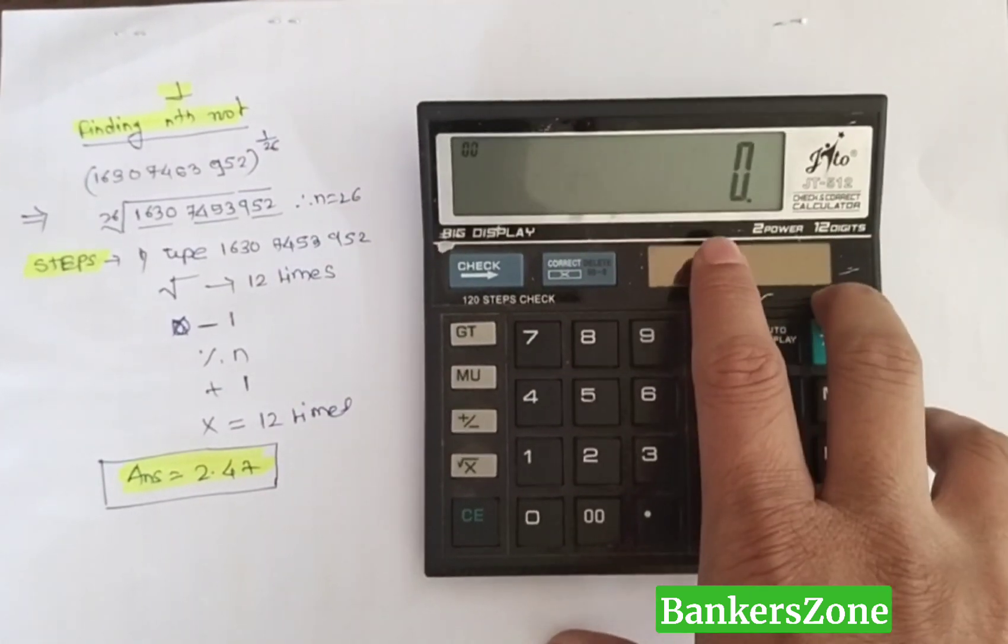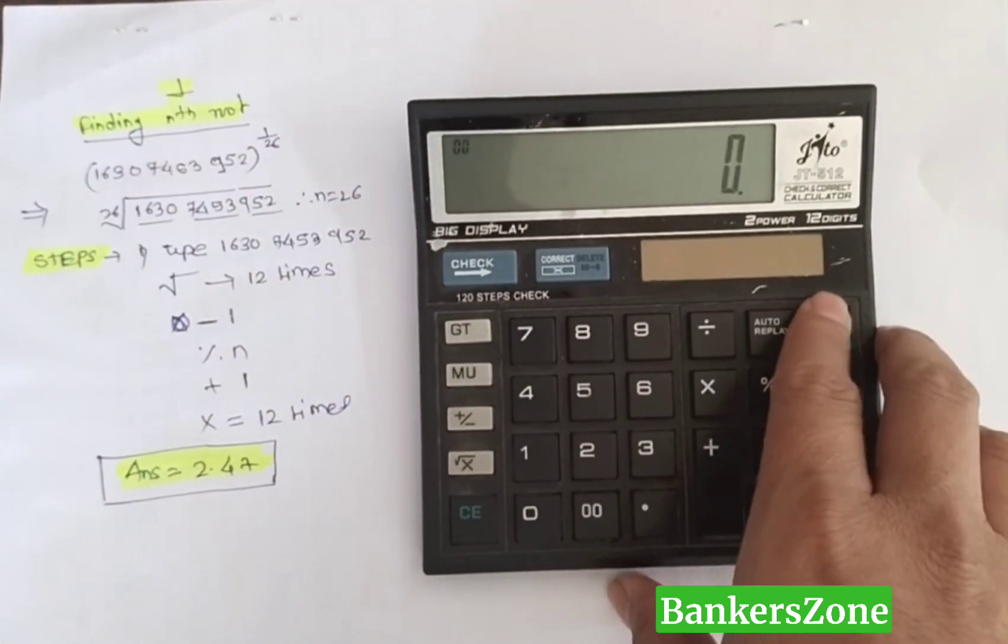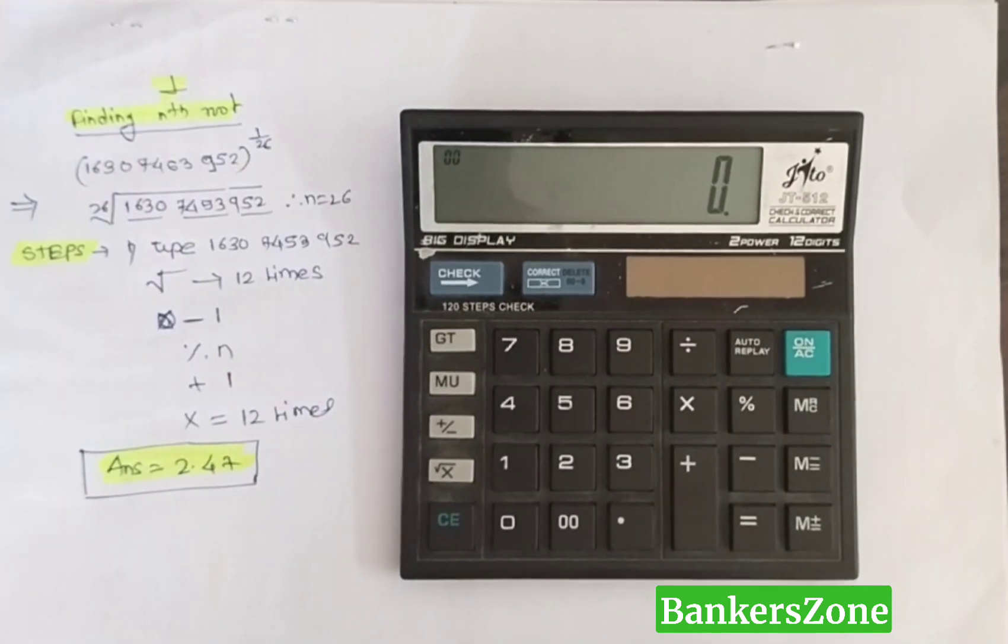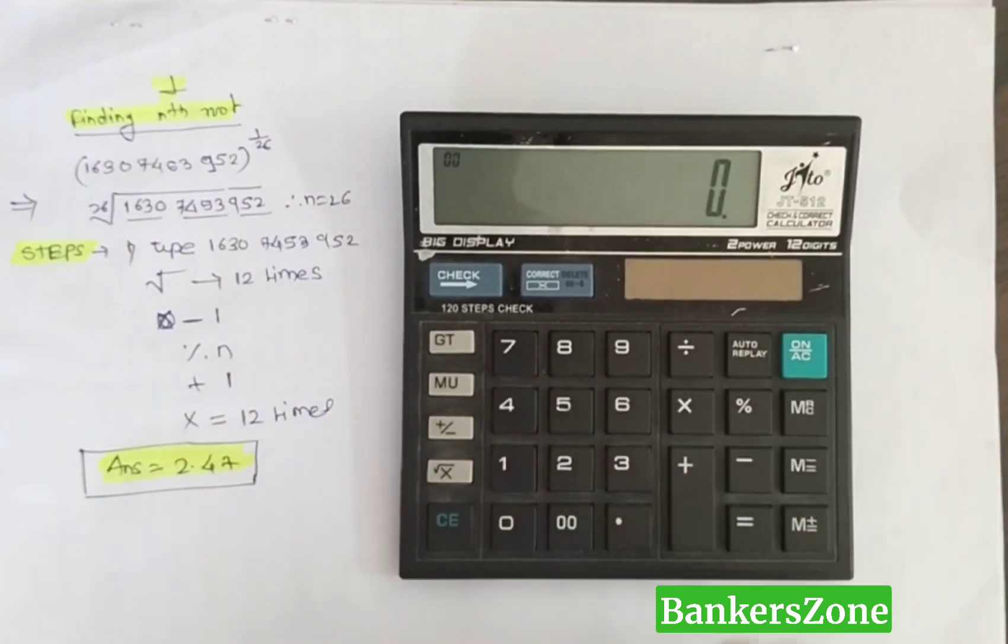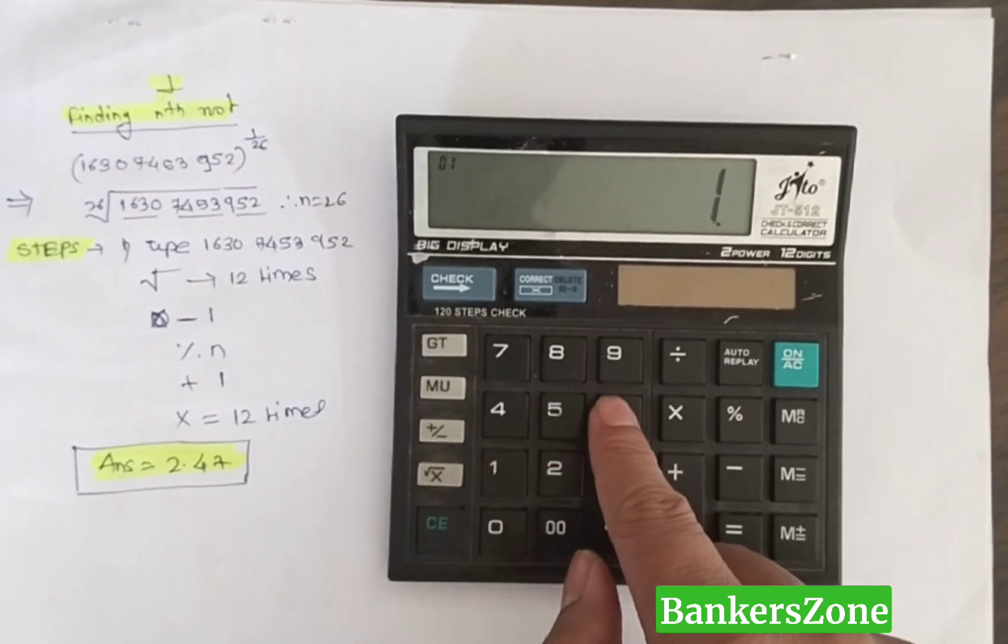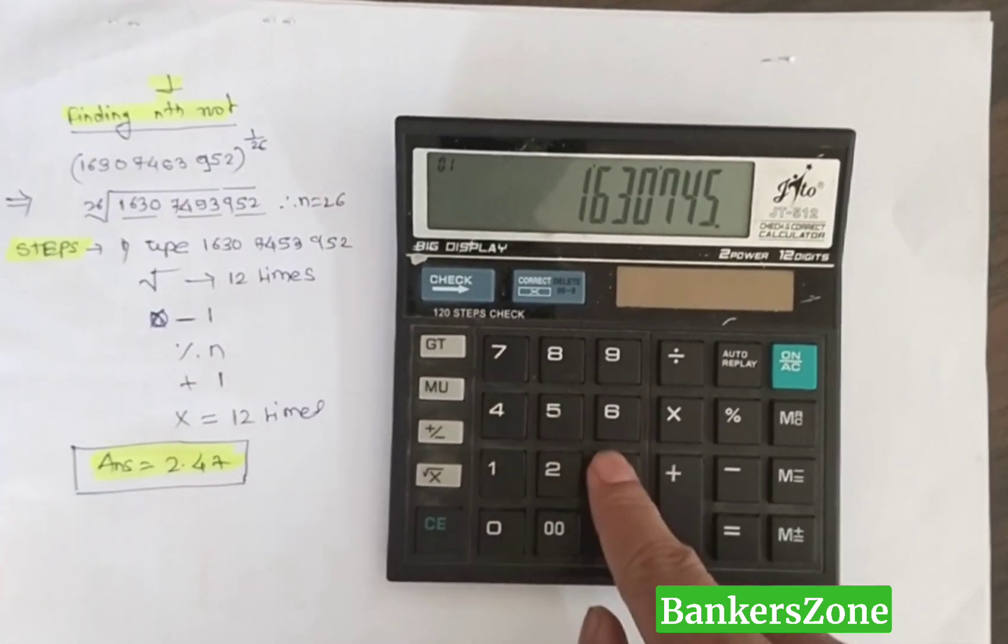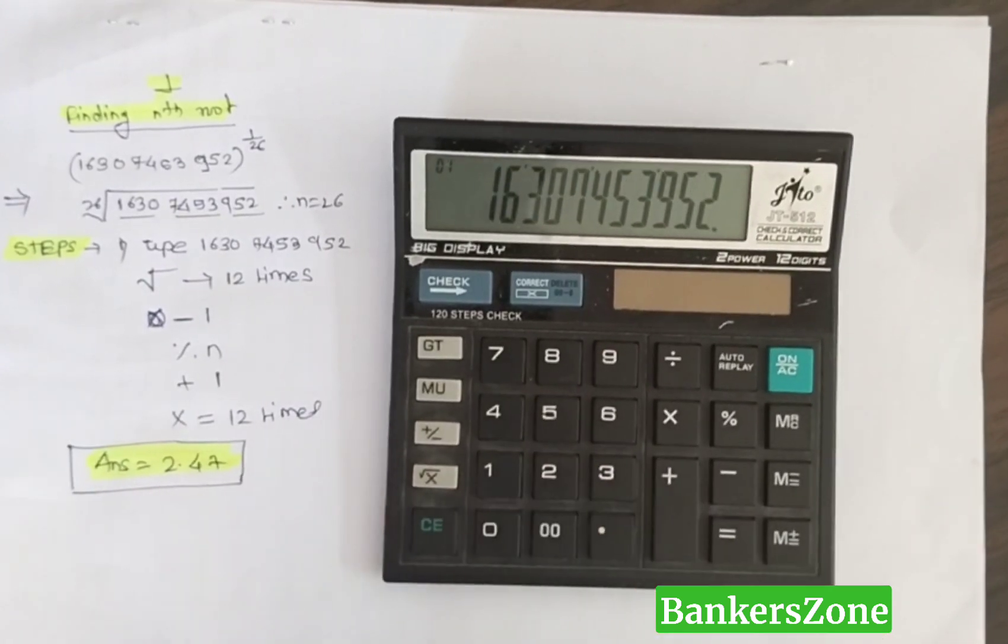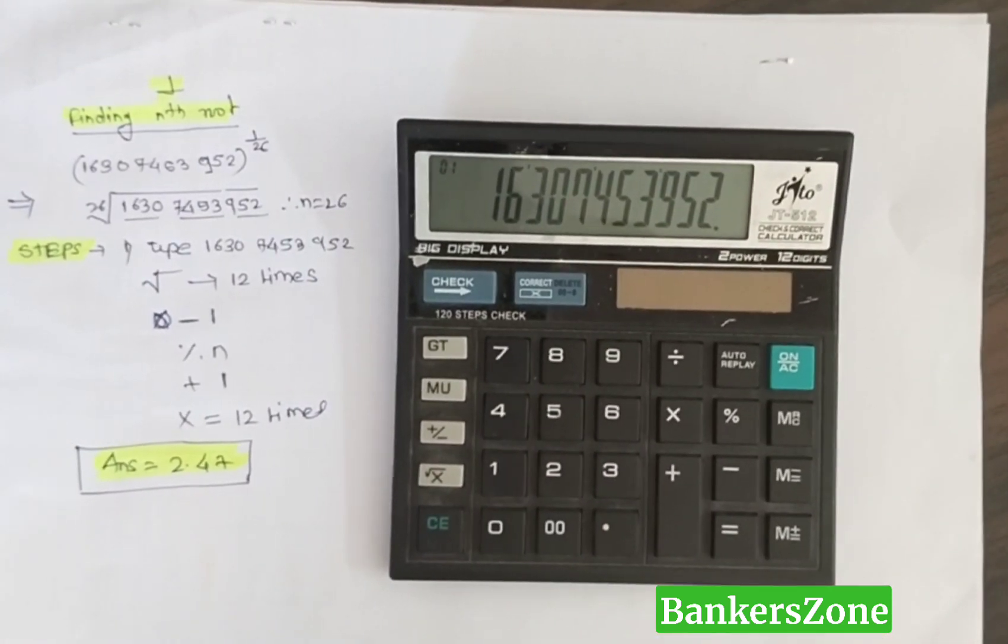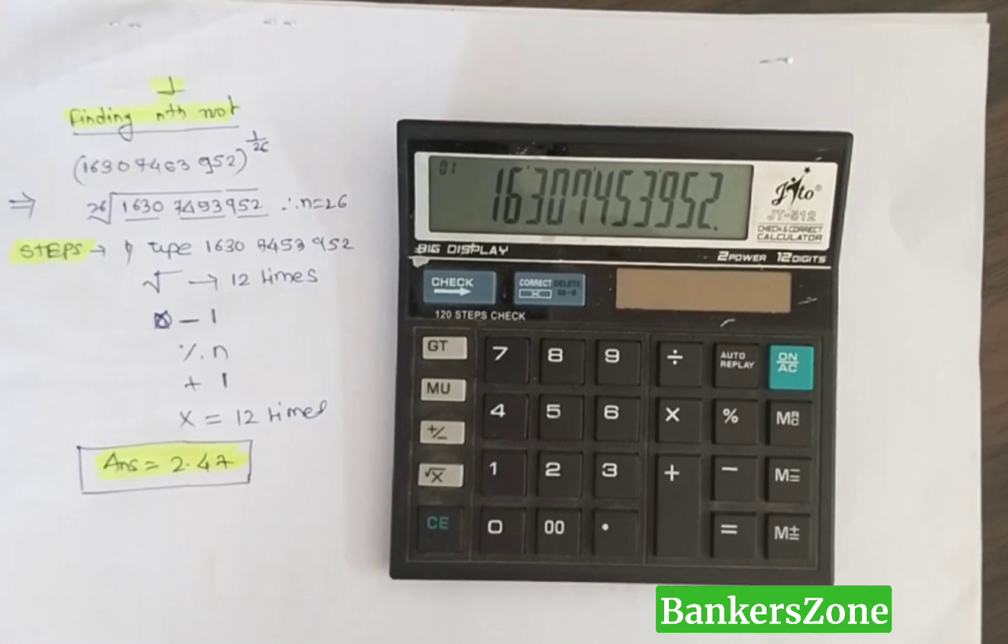I will show you the demonstration using a simple calculator. First, you have to type the number for which you have to find the nth root. The number I will use is 16307453952 - this is a big number for which I have to find the 1 upon 26th root.